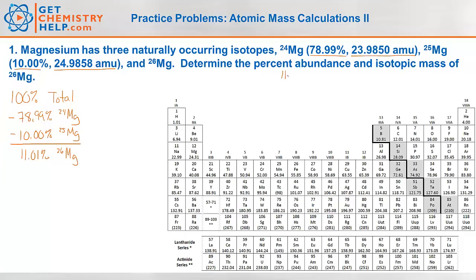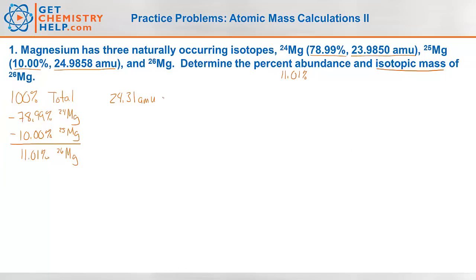I know the percent abundance is 11.01%. So now I still want to find the isotopic mass of that isotope. Well I know that the abundance and the mass of all three has to combine to give me the average, and the average I already know because it's right here on the periodic table — it's 24.31. So I know that all of them have to add up to be 24.31 AMU. So let's go ahead and get rid of our periodic table and work this out. Abundance times mass of magnesium-24. Remember the percent abundance has to be converted back to a decimal — we move that decimal two places to the left.